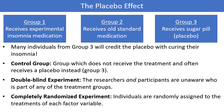A completely randomized experiment is what we have been alluding to this entire time, and is the case where individuals are randomly assigned to the treatments of each factor variable. Ideally, if there are six treatment combinations as there were in our example, each member has a one in six chance of being assigned to any of the six treatment combinations.